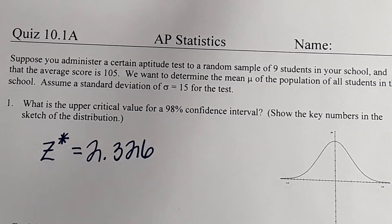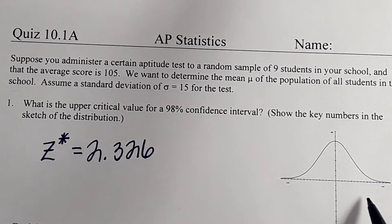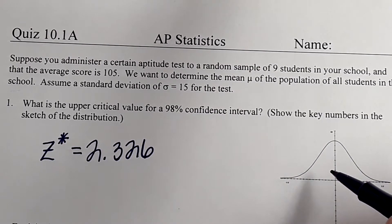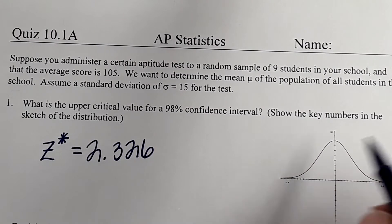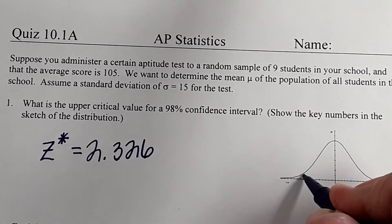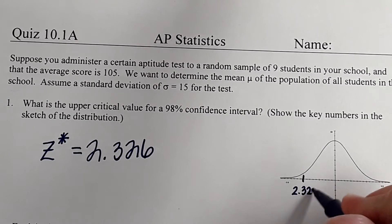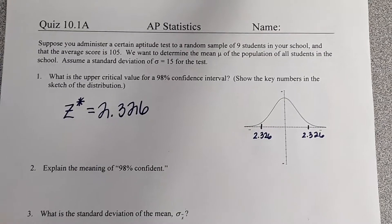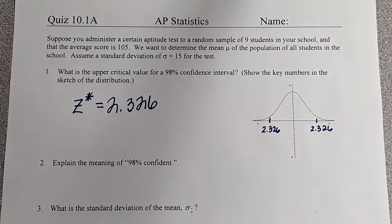Now it says to sketch it. Sketching it means finding where it falls on the normal curve. It would be a little bit over two standard deviations away — so 2.326 goes over here on the right side. You put it on a normal curve.